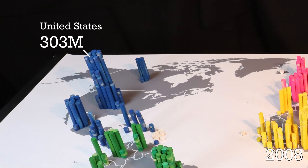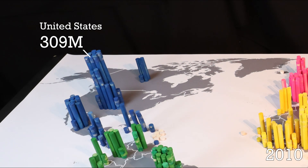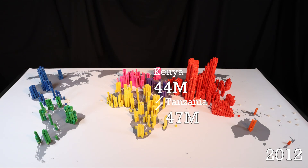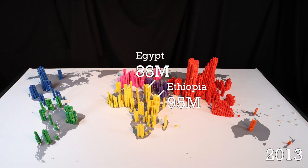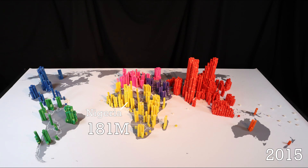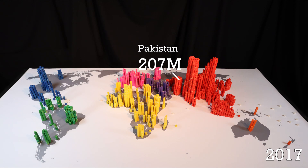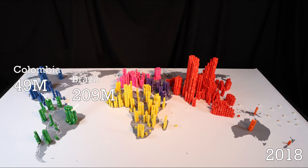The US is the third nation to pass 300 million in 2007. In 2011, the global 7 billion mark is passed, and now population growth in Africa is driving global development as some Asian nations are starting to slow down and even stagnate. Kenya and Tanzania pass 50 million. Ethiopia passes 100 million in 2015, doubling its population in just 23 years. Egypt passes the same number four years later in 2019, and Nigeria passes 200 million that same year. South Korea passes 50 million in 2012, the Philippines 100 million in 2014, and Pakistan 200 million in 2016.